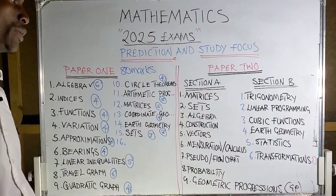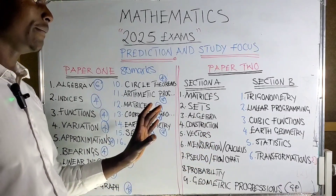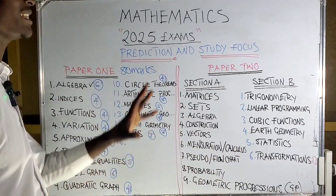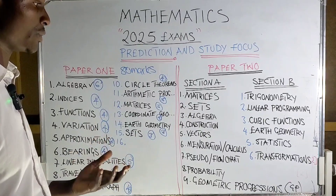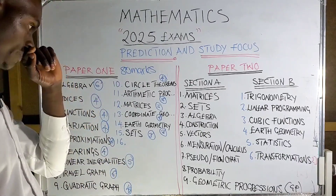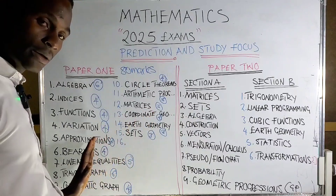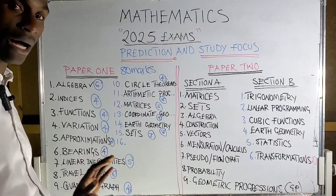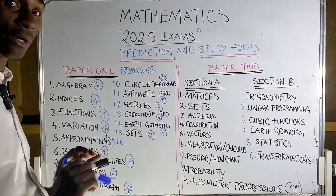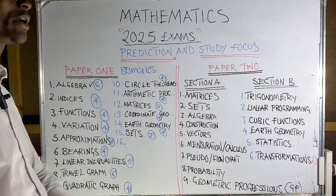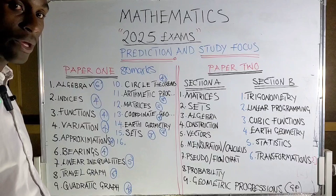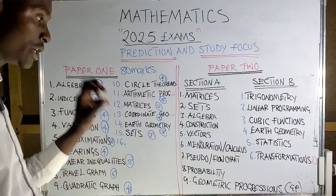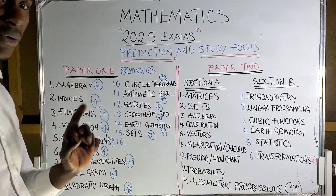Now let's go to paper two. Just like in paper one, we've allocated marks for paper two as well. These are the topics you should focus on. There are a lot of topics we've left out because they carry few marks, but that doesn't mean you shouldn't answer them in the final exam — it means prioritize. Your priority should be making sure you've answered these major topics.